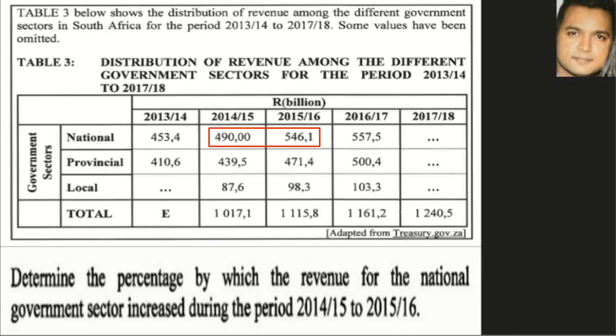The next question asks us to determine the percentage by which the revenue for the national government sector increased during the period 2014-15 to 2015-16. The highlighted amounts in the red square are what we need. This is a question on percentage increase and decrease — we see an amount changing and are required to find a percentage.